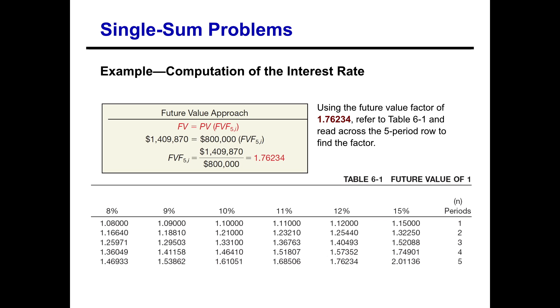So again, we start with setting the future value equal to the present value times the future value factor at five periods and we don't know the interest rate. So again, that piece is our unknown. So we have our $1,409,870 set equal to $800,000 times the future value factor, which is what we're solving for. Get that by itself on one side of the equation and you find that the future value factor is 1.76234.